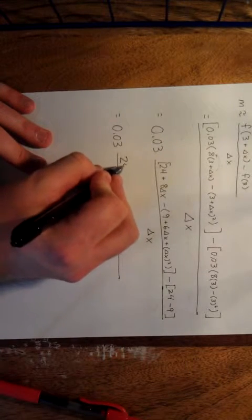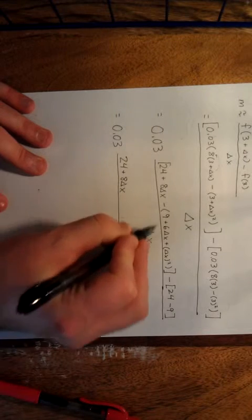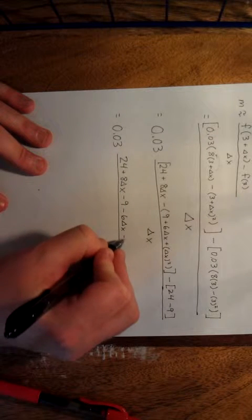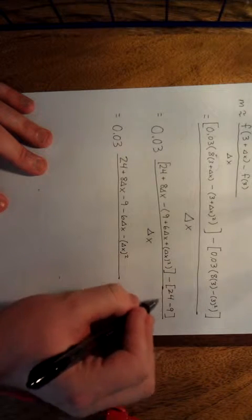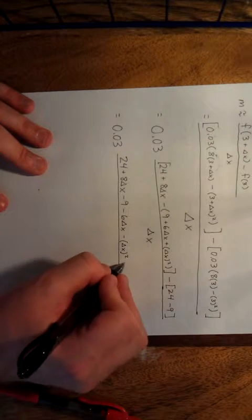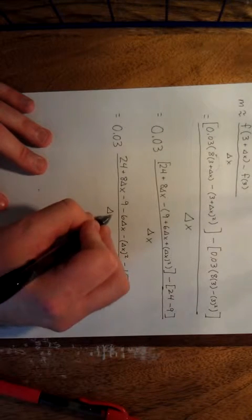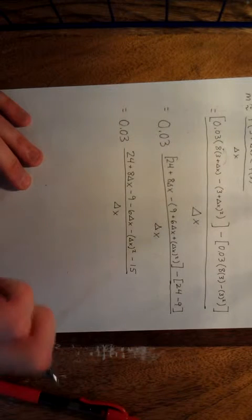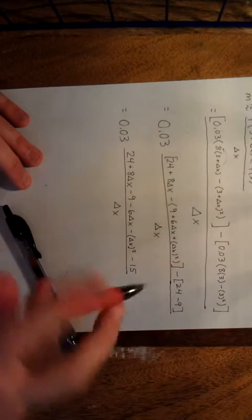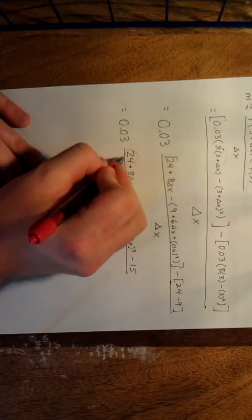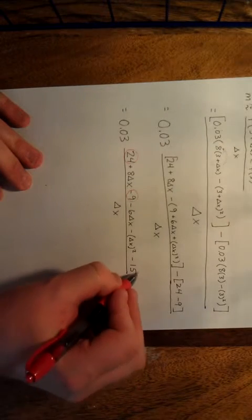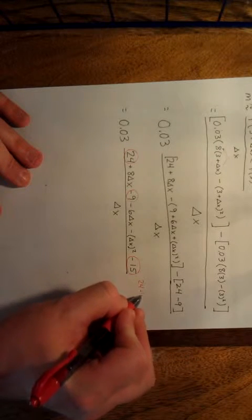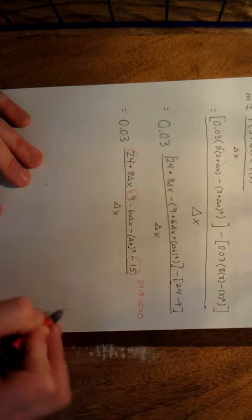Looking at the constant terms: we have 24, minus 9, minus 15 — those cancel out and give us 0. All over delta x. That's good news! The constants all cancel perfectly.